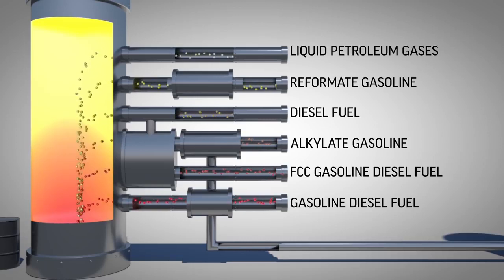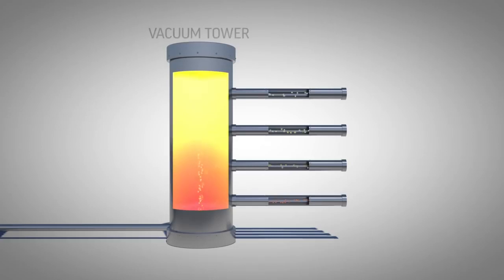The heaviest material from the bottom of the tower is sent to yet another unit called a vacuum tower, to be separated again into useful fuels.